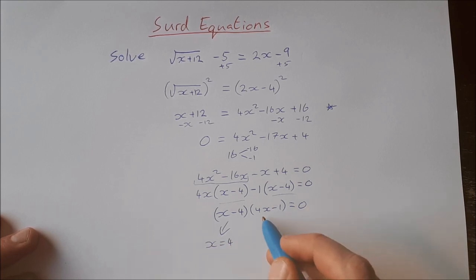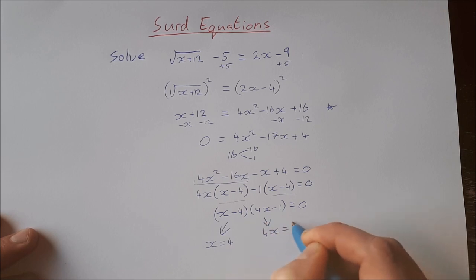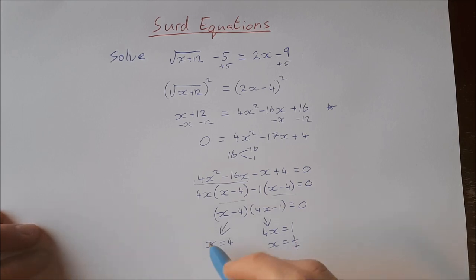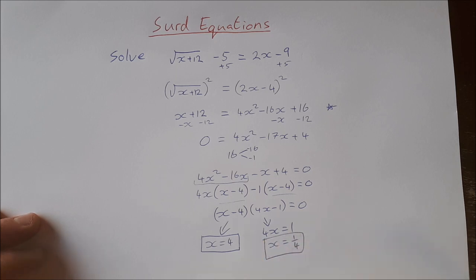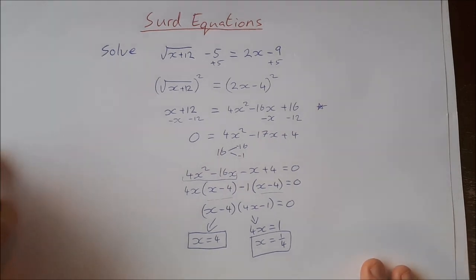That leaves me with a common factor of x minus 4, times 4x minus 1, equal to zero. So my two roots of the equation are x equals 4, and from 4x equals 1, x equals one quarter. We've got two solutions to this radical equation: x equals 4 and x equals one quarter.